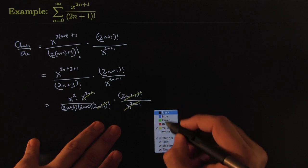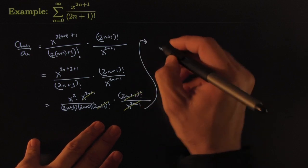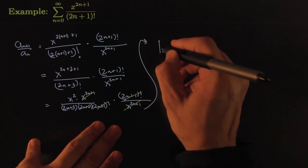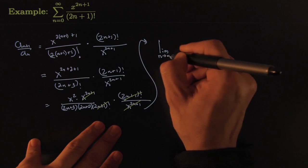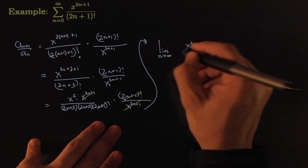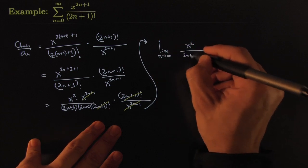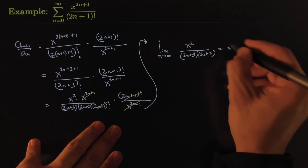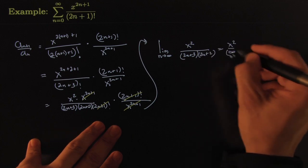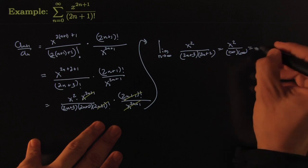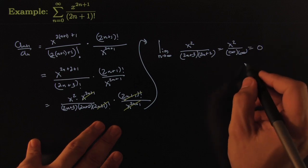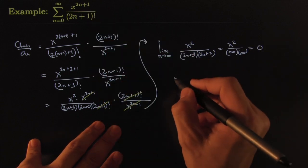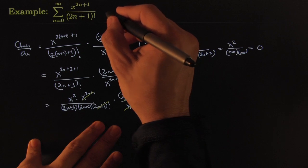So now we need to compute that limit—the limit as n goes towards infinity of x squared all over 2n plus 3 times 2n plus 2. Try the plug-in method, you get that times that, which is clearly that.